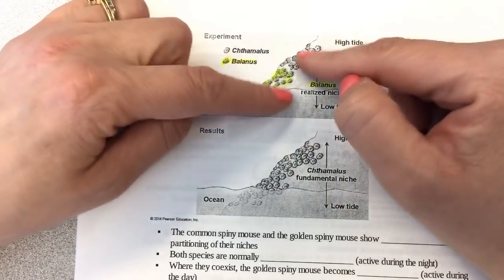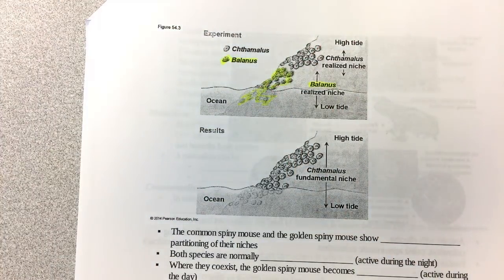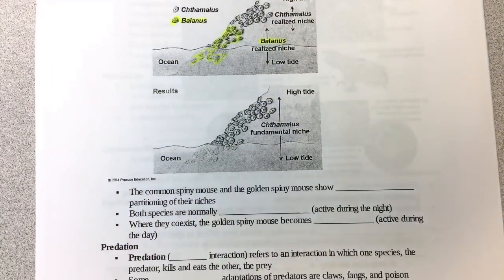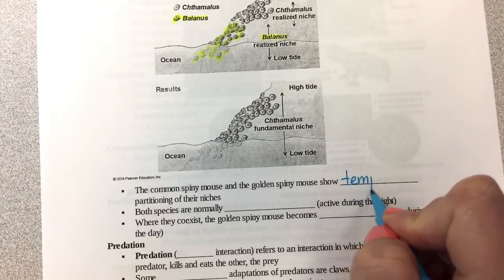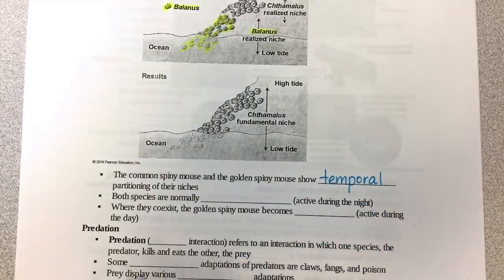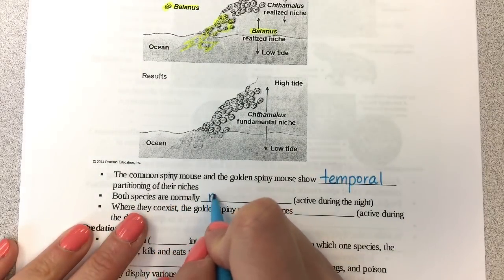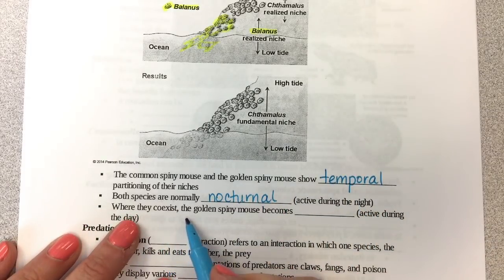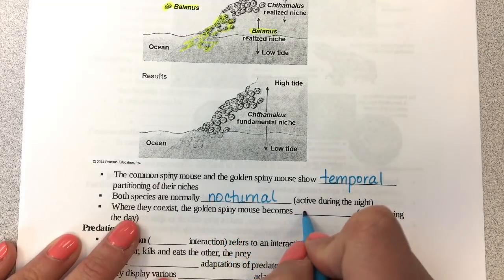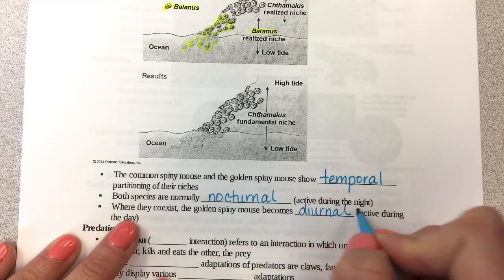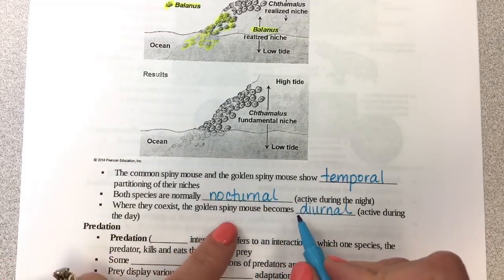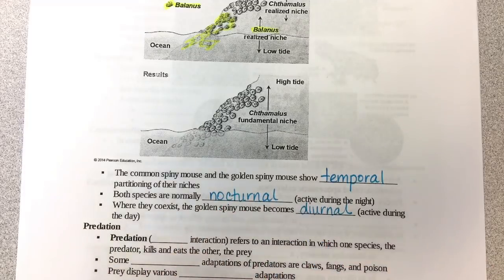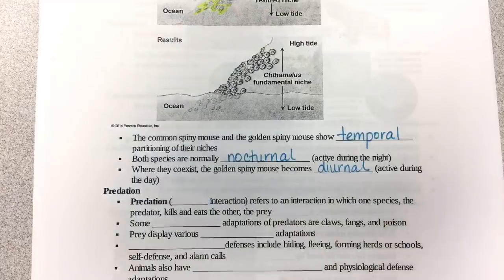Another example: the common spiny mouse and the golden spiny mouse show temporal partitioning. Both species are normally nocturnal, but where they coexist, the golden spiny mouse becomes diurnal — active during the day — so they can both coexist without directly competing. That's another example of resource partitioning and reducing competition so species can coexist.